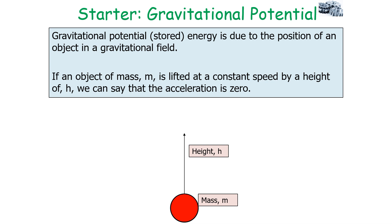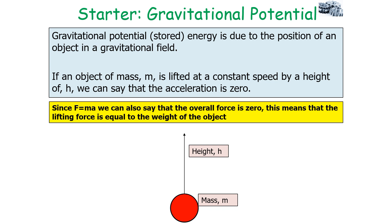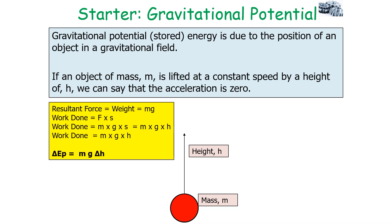Gravitational potential energy is due to the position of an object in a gravitational field. If an object of mass M is lifted at a constant speed by a height H, the acceleration is zero. Since F = MA, the overall resultant force is zero, which means the lifting force equals the weight of the object (Mg). Since work done equals force times displacement, we can substitute to get work done = M × G × H. Therefore, gravitational potential energy = mgΔh, where Δh is the change in height.